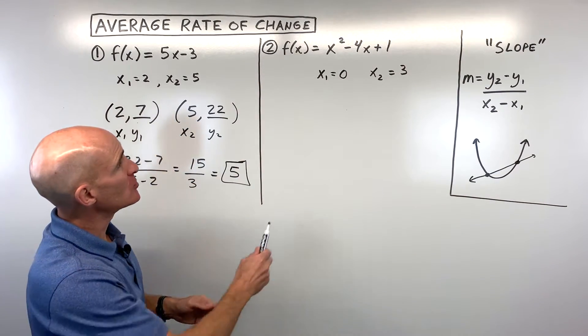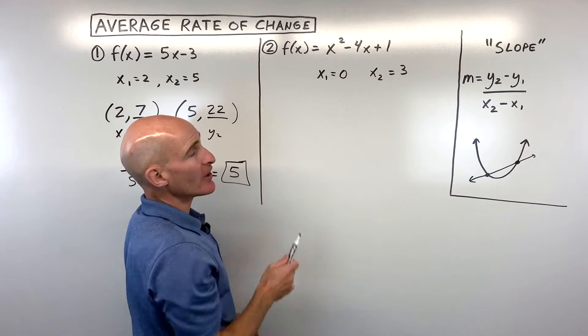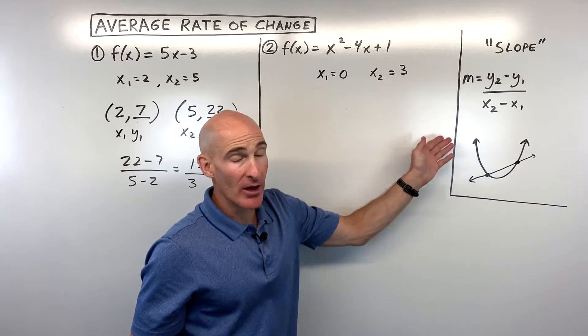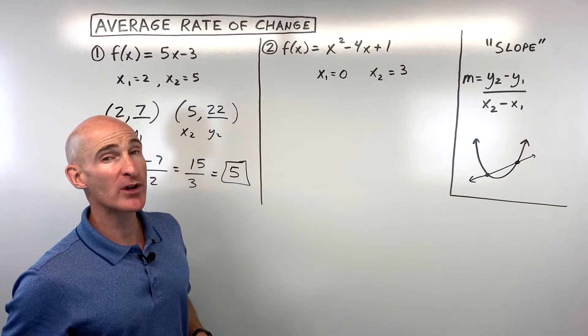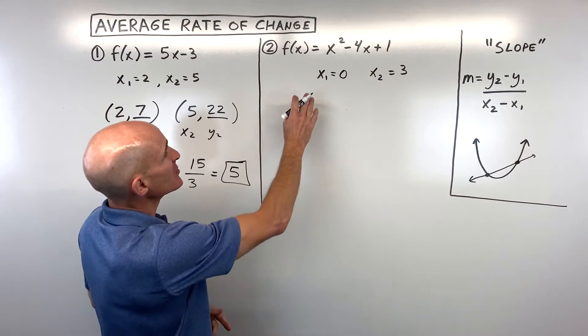But in this next example, number 2, you can see we're dealing with a quadratic function, which is a parabola, and the average rate of change is not always the same. It depends on between what two points you're working with. So let's look at this one now.